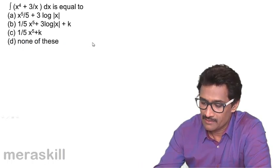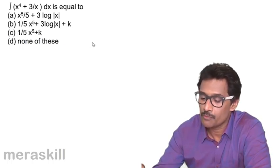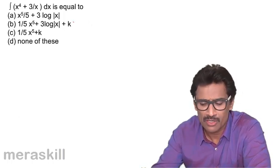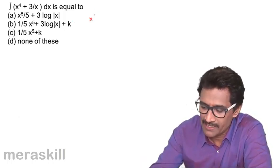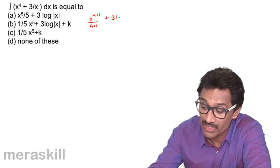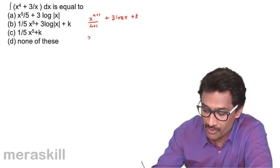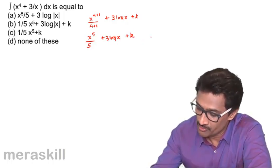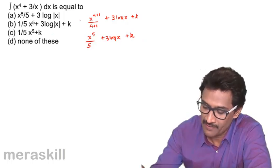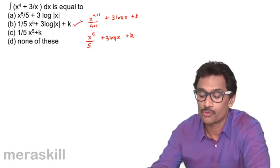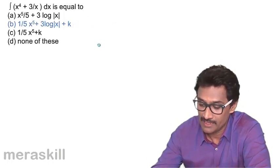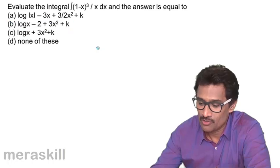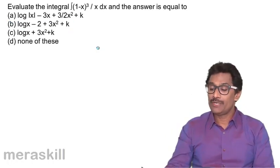Next, evaluate the integral of x⁴ + 3/x dx. This is straightforward: x^(4+1)/(4+1) plus 3·log x, giving x⁵/5 + 3 log x plus a constant. This is the same as (1/5)x⁵ + 3 log x + k, which is option B.